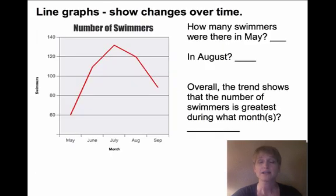First we have line graphs, and line graphs always show changes over time. If you look at this line graph, you can see that it's pretty easy to interpret. There were 60 swimmers in May and in August there were 120. If you're looking for the greatest number of swimmers, you can see that was in the month of July. Very easy to interpret.